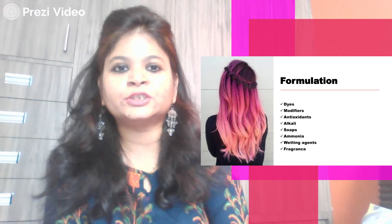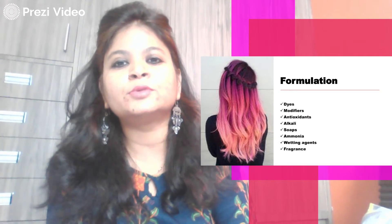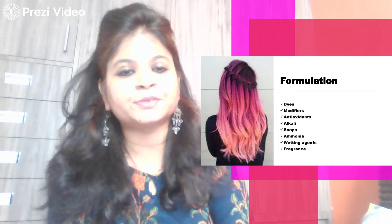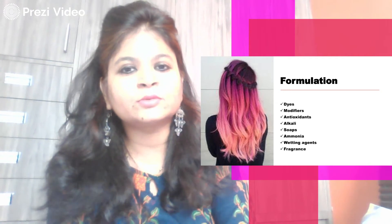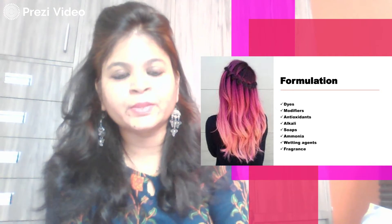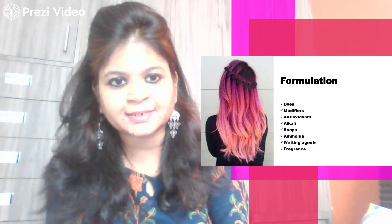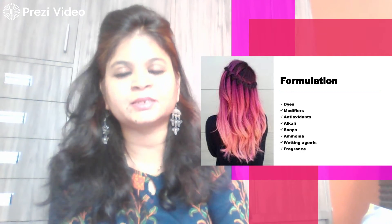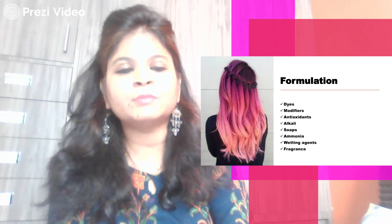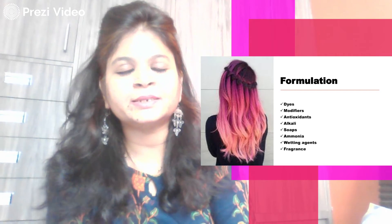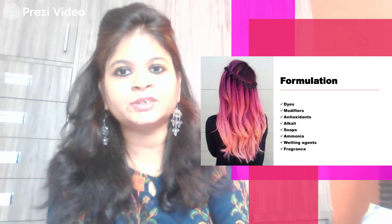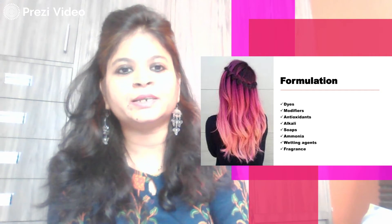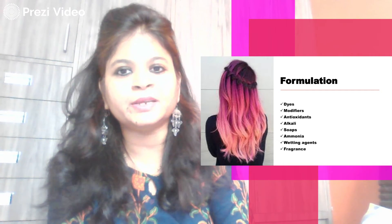Now let us discuss the formulation and composition of hair dyes. Nowadays dyes are composed of a large number of chemicals: dyes as the main color-imparting substance, modifiers, antioxidants, alkalies, soaps, ammonia, wetting agents, and fragrances. The composition of permanent hair dyes is particularly complex, as a complete chemical reaction needs to take place to impart the desired color to the hair.